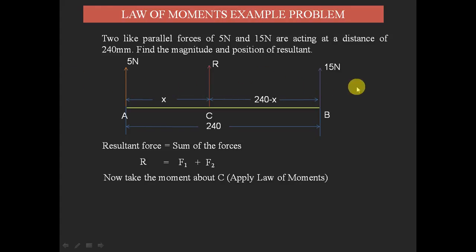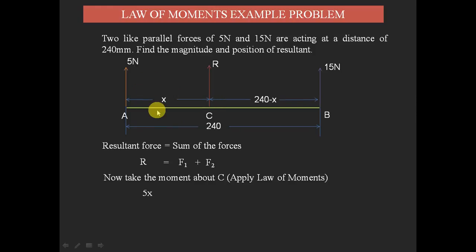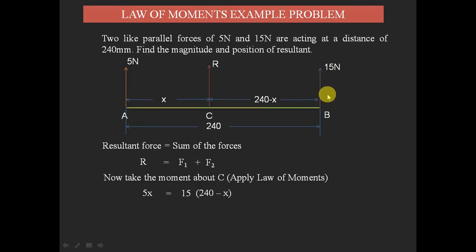To find x, we take moments about point C. We consider the 5-newton and 15-newton forces only — not the resultant, since we are taking moments about C. The moment of the 5-newton force about C is 5 × x. The 5-newton force causes clockwise rotation about C, while the 15-newton force causes anti-clockwise rotation. Therefore: 5 × x = 15 × (240 − x).